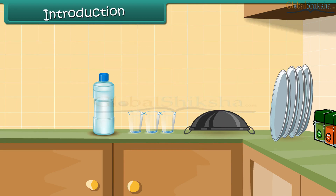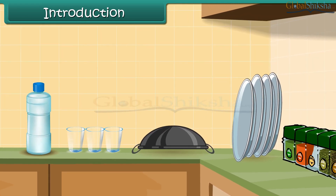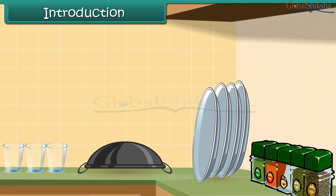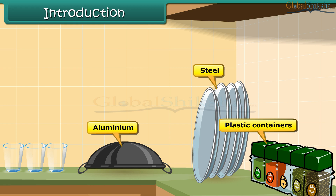Your kitchen shelves must be neatly arranged with rows of food containers, mostly made up of plastics. Plastics have taken so much prominence in our lives that we have replaced materials like aluminium, iron, steel and glass with plastics. So let us find out more about plastics in this lesson, where you will study about the general properties of plastics and their importance in our everyday lives.